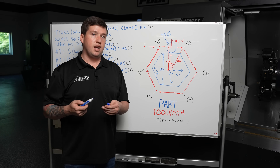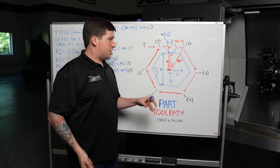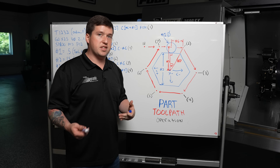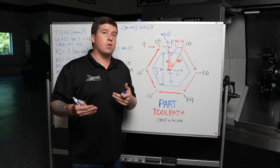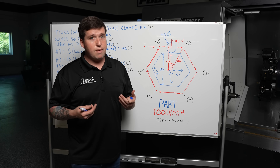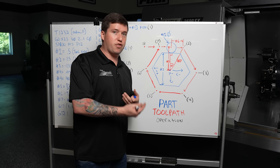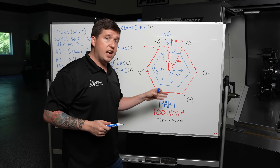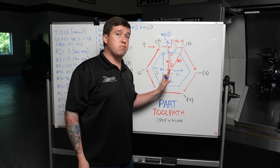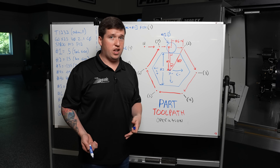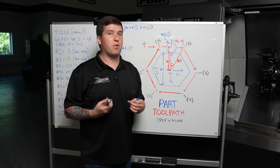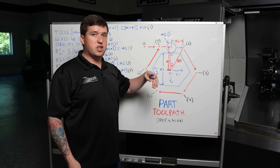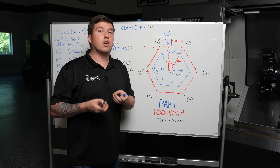X is a diametrical axis — it wouldn't make sense if we were trying to make a one-inch hexagon and we told it to make a half-inch hexagon and did all the math ourselves. Machines double the amount in X to make programming as simple as possible. So when you're turning a one-inch diameter, you program X of one inch even though you're only half an inch from center. C minus and C plus is a radial axis, so if I move half an inch in C, I actually move half an inch. If I move half an inch in X, I only move a quarter of an inch.